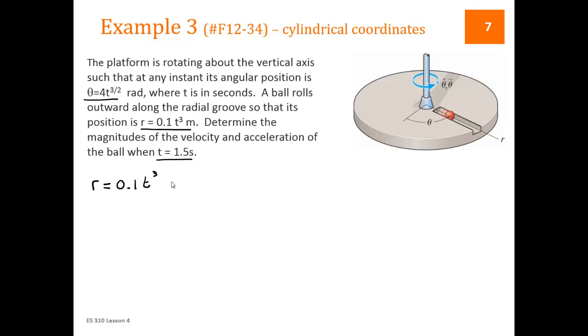We're given r is 0.1t³, and we know that t is equal to 1.5 seconds. So at 1.5 seconds, r is equal to 0.3375. To find ṙ, we need to take the derivative of r. So ṙ is 0.3t². We plug in, these are all at t equal to 1.5 seconds. So ṙ is equal to 0.675. r̈ is 0.6t, which then gives us r̈ is equal to 0.9.